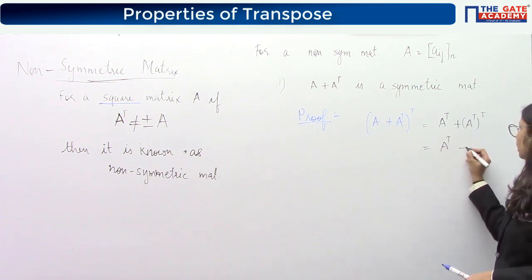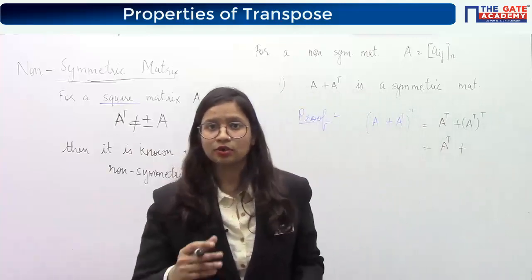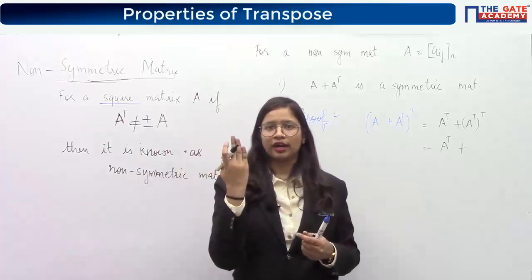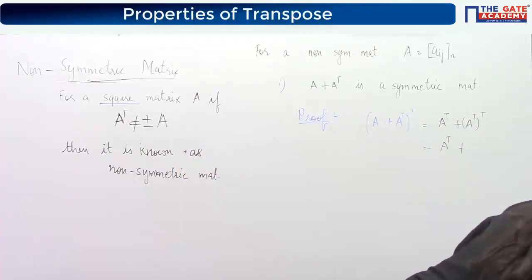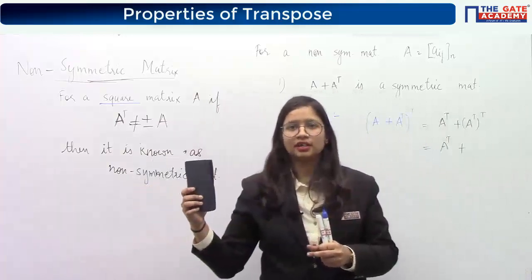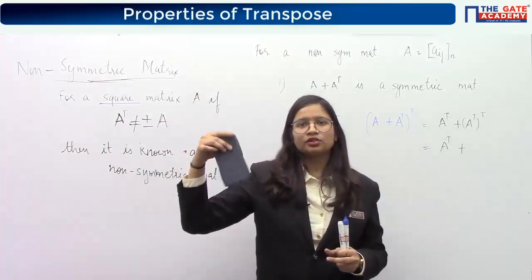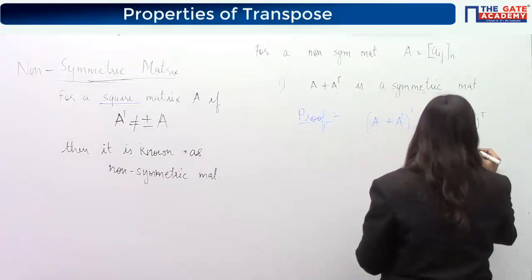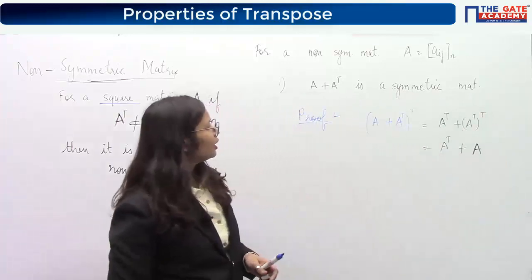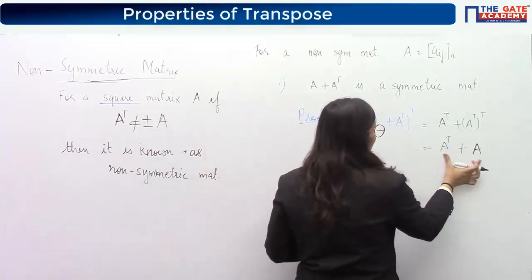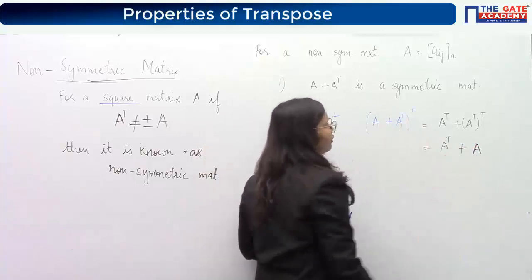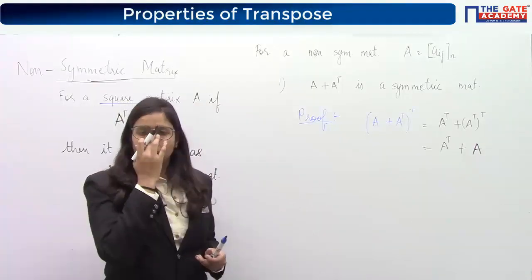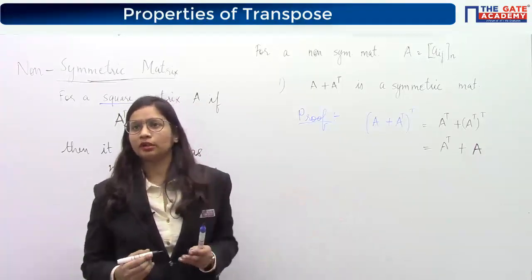A transpose is already there. If I interchange the rows into columns once and again the columns into rows — like rotating a phone screen twice — it comes back to A. So A transpose's transpose is again A. Therefore the transpose of A plus A transpose equals A transpose plus A, which is the same matrix. So A plus A transpose is a symmetric matrix.